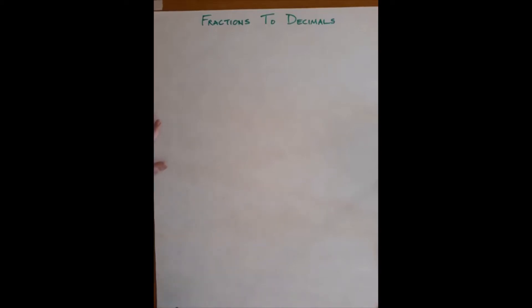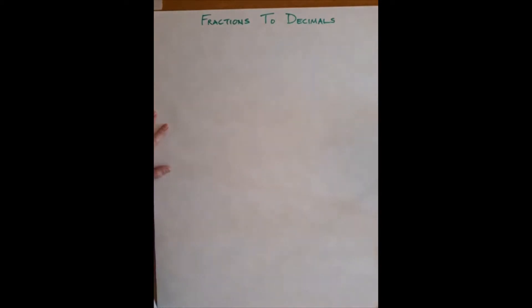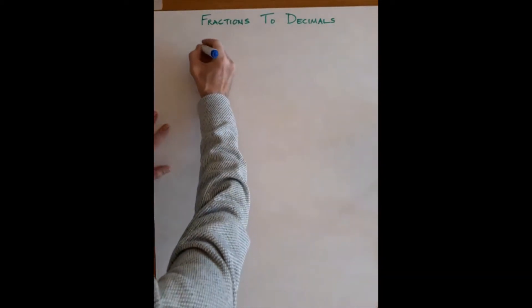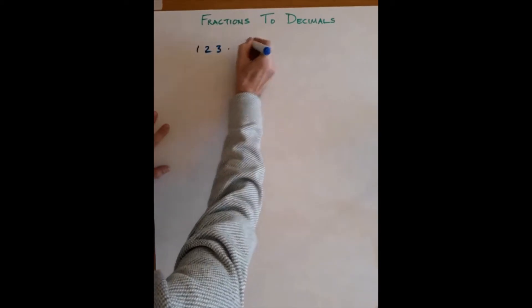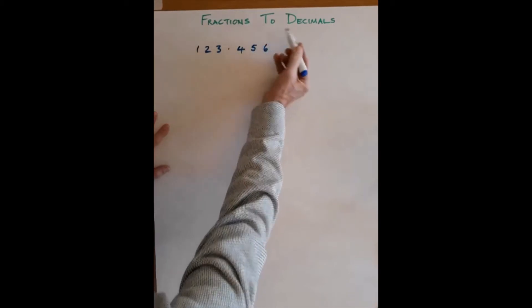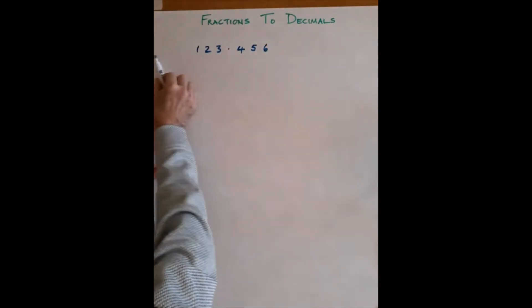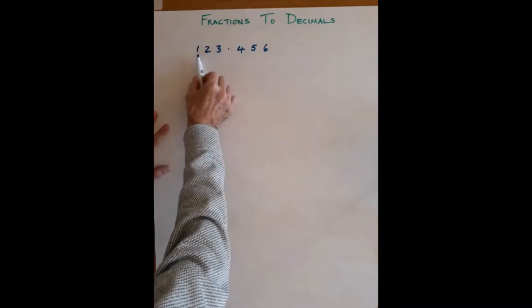Let's look at converting vulgar fractions to decimals. Before I do anything with this, a very quick reminder about place value because it is important. If I had the number 123.456, working to the left of the decimal point we have units, tens, and hundreds.